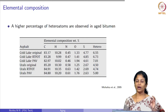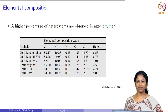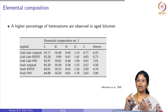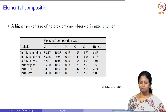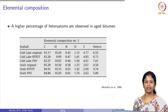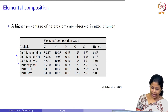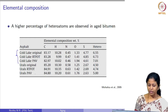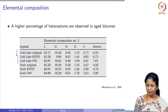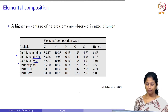Next we look at the effect of aging on different levels of bitumen microstructure: the elemental level, the fractionation level, and the molecular level. In a study by Michalika et al., two types of bitumen — cold lake bitumen and Ural bitumen — were aged using short-term aging defined as RTFOT and long-term aging defined as PAV.